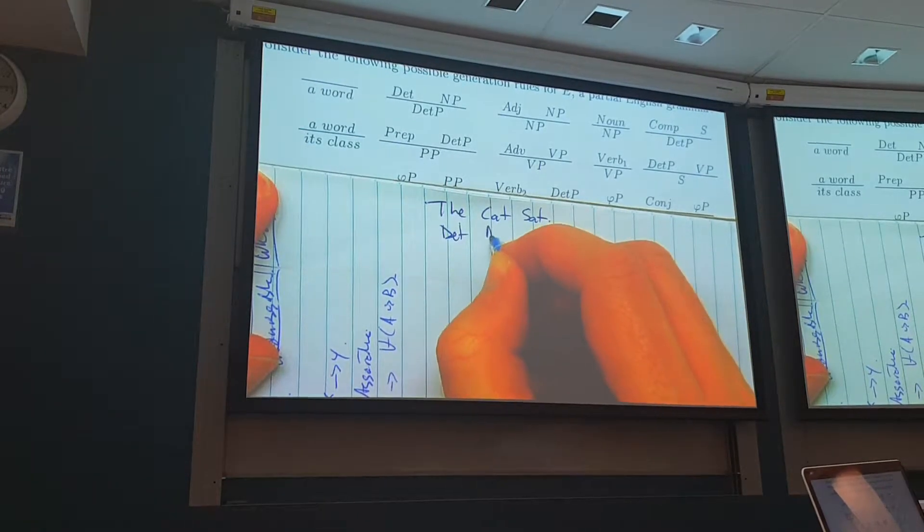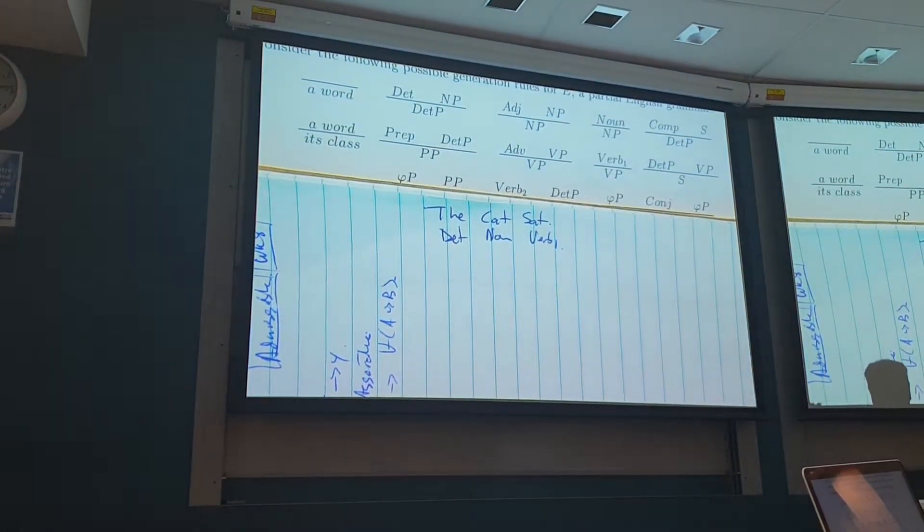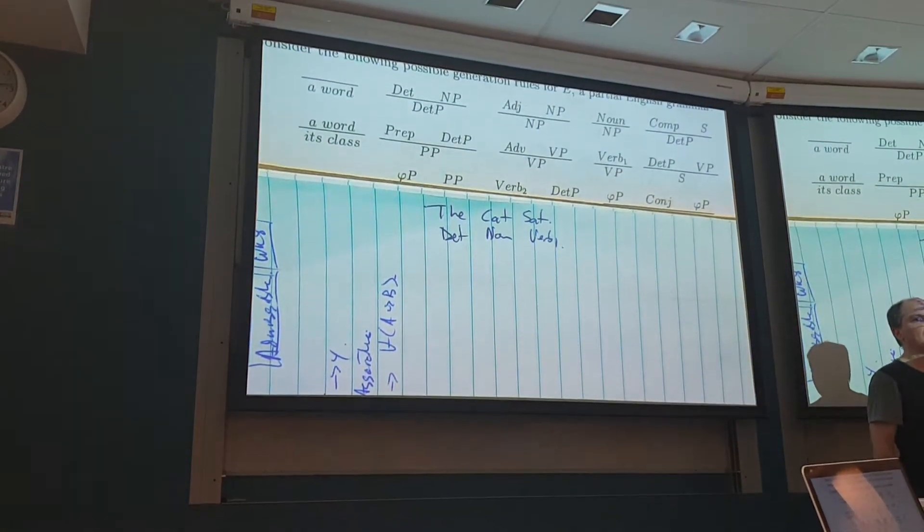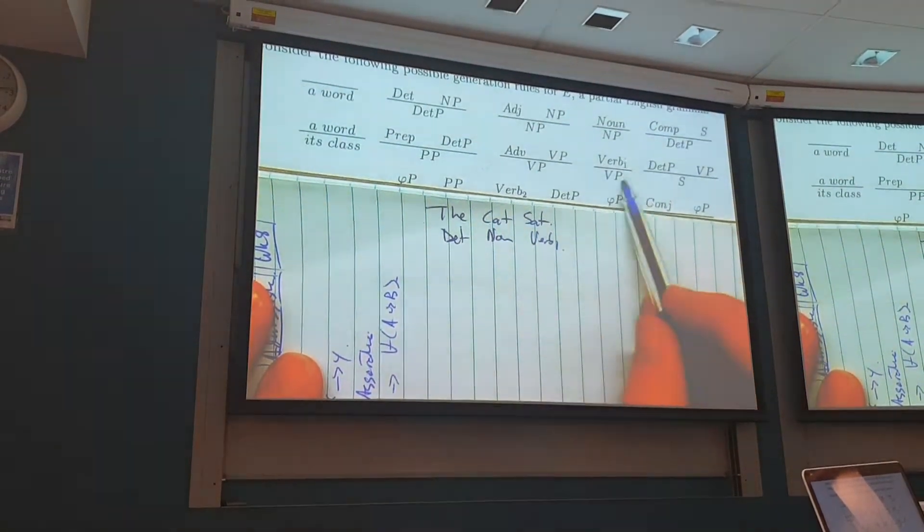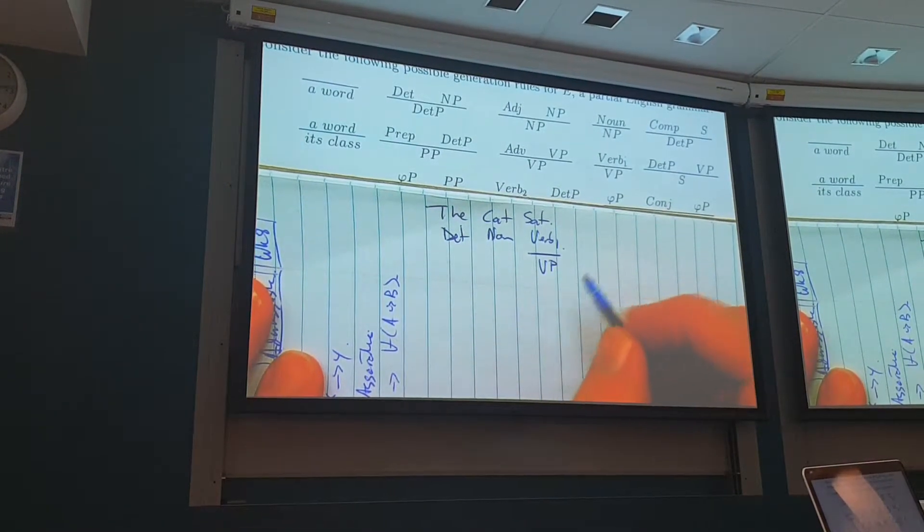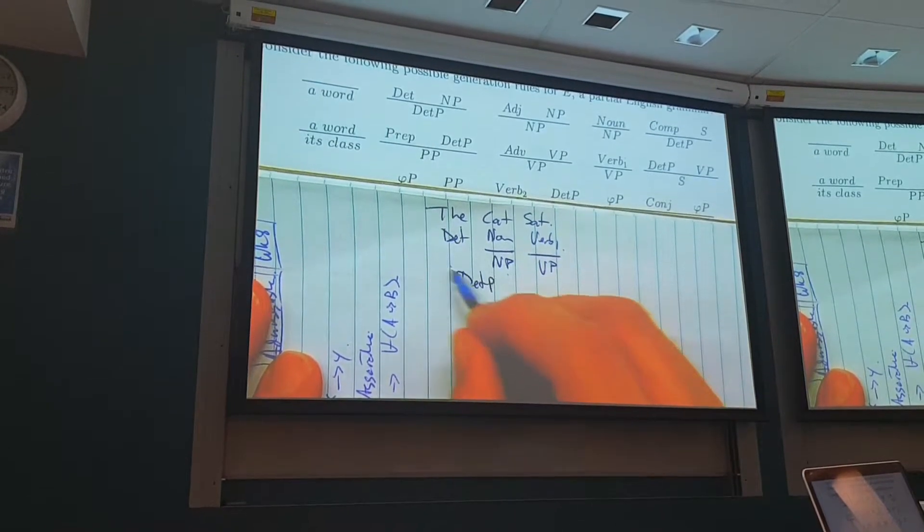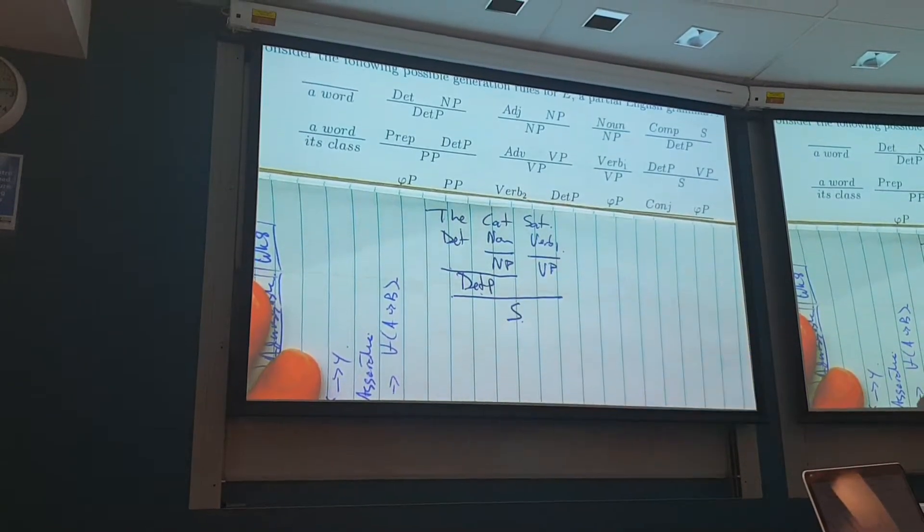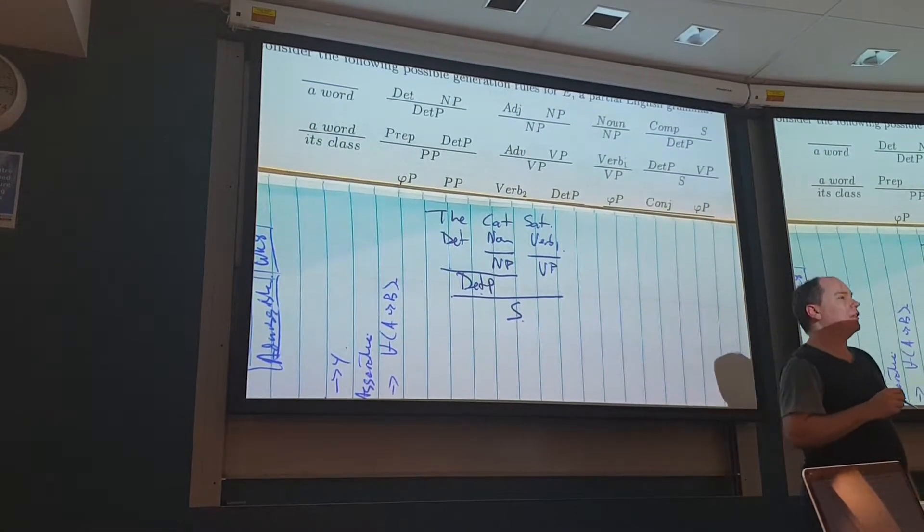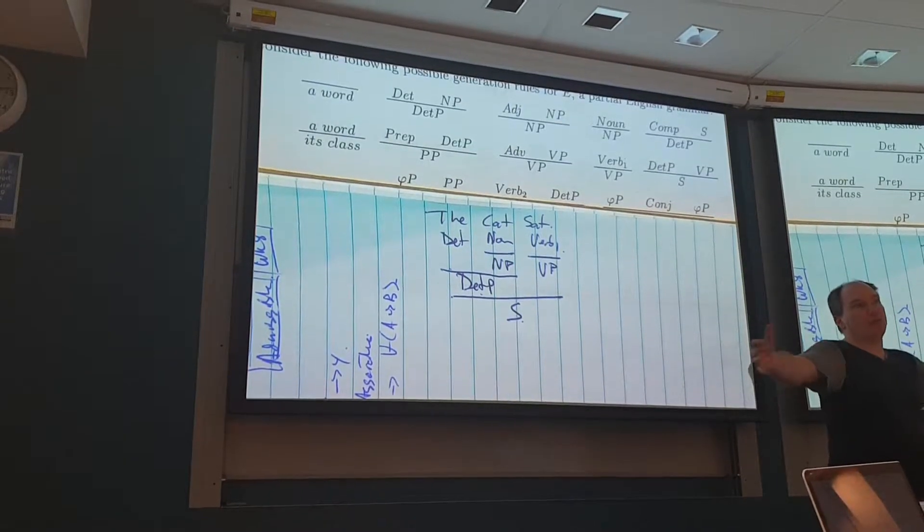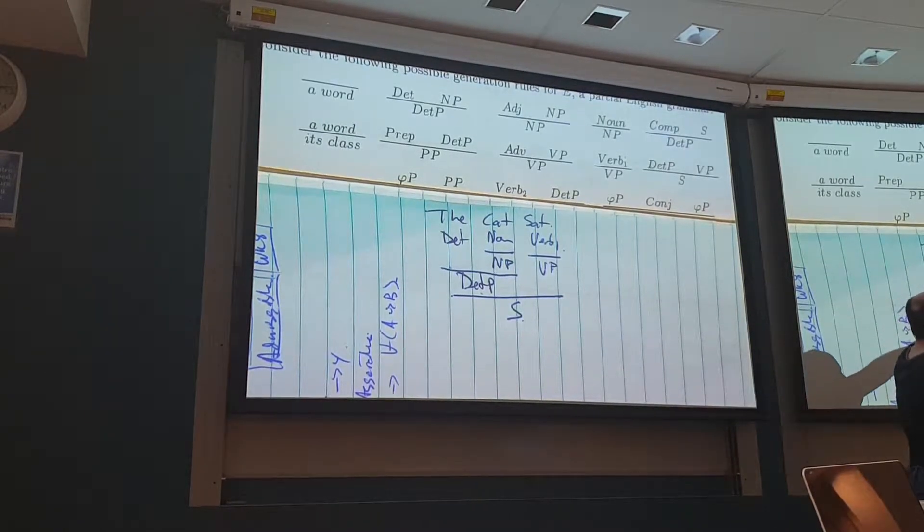The cat sat. Now, the is a determiner. Cat is a noun. Sat is a verb one. The one says there's only one object it's talking about. As opposed to if the cat kills the mouse, it's talking about two objects. Verb one becomes a verb phrase. Sometimes there's other things you can do with that verb. The noun becomes a noun phrase. The determiner and the noun phrase become a determiner phrase. The determiner phrase and the verb phrase become a sentence. So now we know that it's true or false that the cat sat. Now, we don't know which one it is. We don't know what the cat is or what it does. But it's a sentence and it's a thing that's true or false.